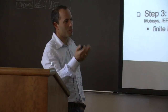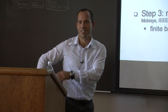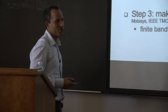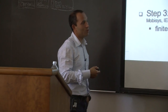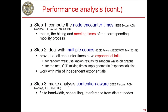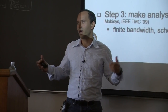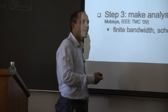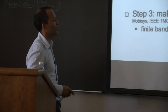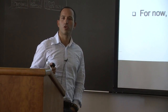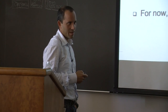Q: Could traffic simulation models providing vehicle encounter distributions help? A: Yes — they give distributions of encounter times, which feed directly into the analysis. But you still need to work out the formulas: expected delay as a function of number of cars, transmission ranges, and number of copies, to derive the optimal number of copies. If encounter time tails are exponential (as shown by real traces), the math is tractable. If not, the analysis becomes very difficult.